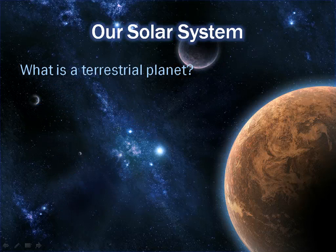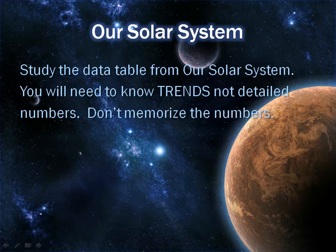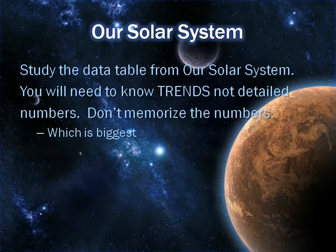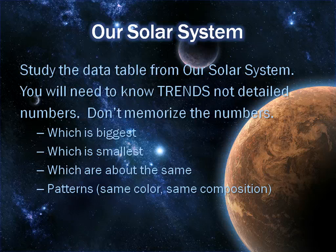The next topic is what is a terrestrial planet? The name often given to the four inner planets means it's made of rock or has land. Now, the last thing you need to make sure you look at is the data table from our solar system. You will need to know trends, not detailed numbers — don't memorize the numbers. I'm not going to ask you to write down the mass of Mercury, for example. But I do want you to know which one's the biggest, which is the smallest, which are about the same, patterns such as same colors or same composition, and other key important factors.